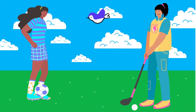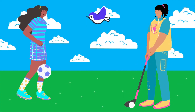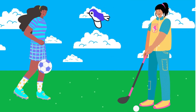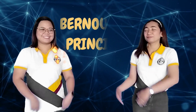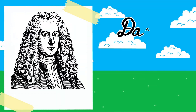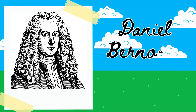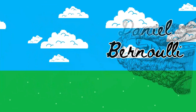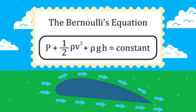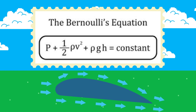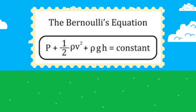It's also the same principle that allows birds to fly and even helps shape our favorite sports balls like soccer and golf balls. This principle is what we call Bernoulli's Principle. It was named after Swiss mathematician and physicist Daniel Bernoulli. In his equation, the sum of the pressure, kinetic and potential energy, remains constant along a streamline within a closed system.